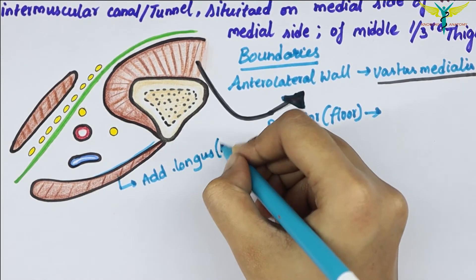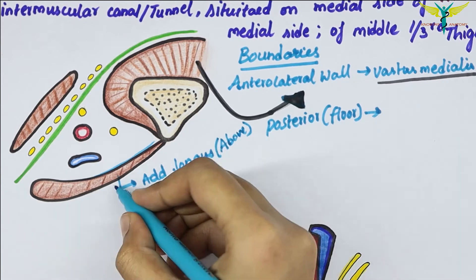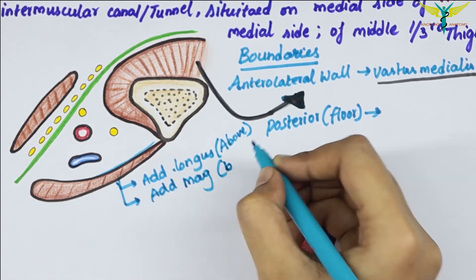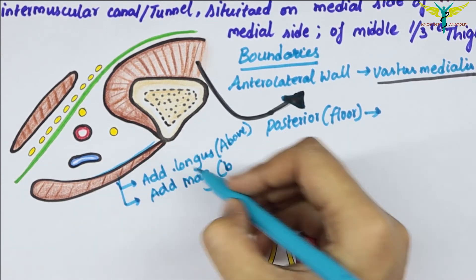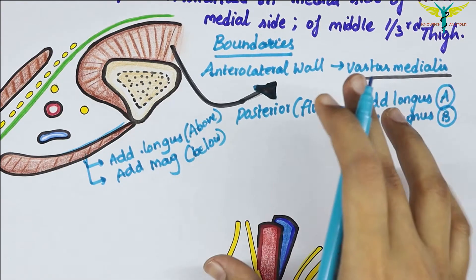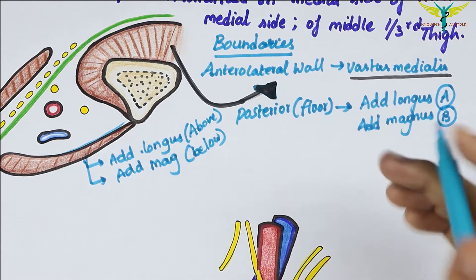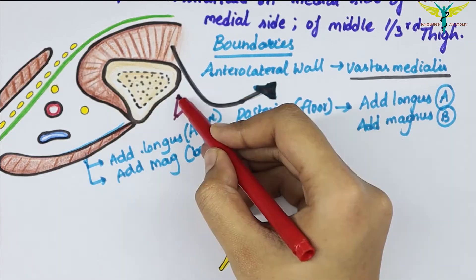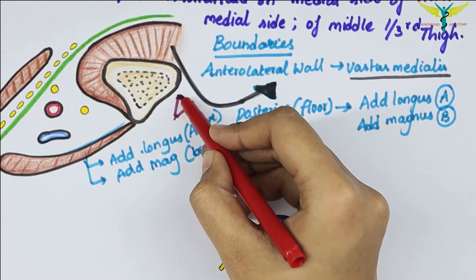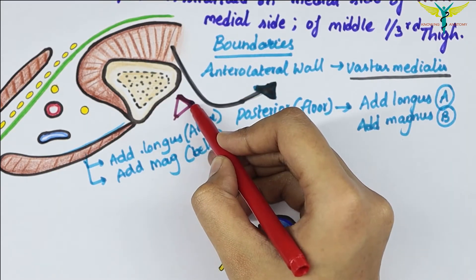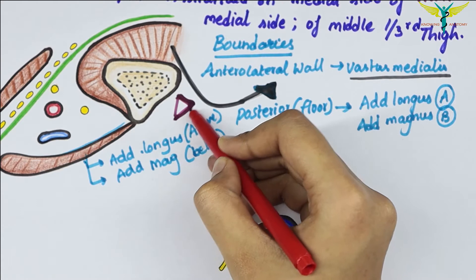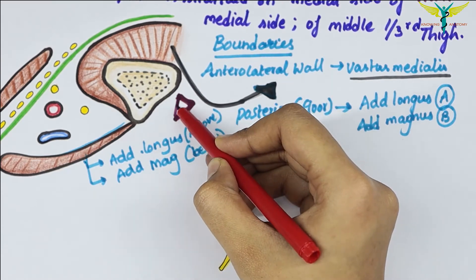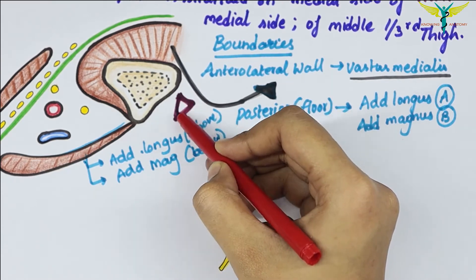The posterior boundary, or floor, is formed by the adductor longus above and the adductor magnus below. So the adductor longus forms the floor in the upper part and the adductor magnus forms the floor in the lower part. With the anterolateral wall and the floor described, the canal's triangular cross-section is taking shape.